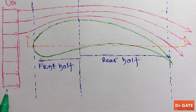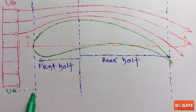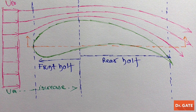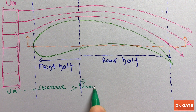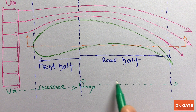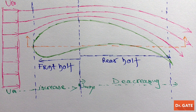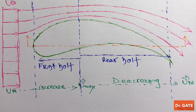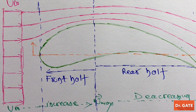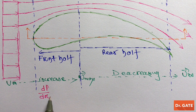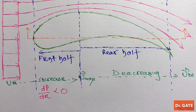To summarize: here velocity is u-infinity, and as we move along the flow there is an increase in velocity. Here velocity is maximum. If we further move along the flow, velocity will start decreasing and becomes u-infinity again. Applying Bernoulli's equation between any two streamlines on the front half of the aerofoil, we can get that dp/dx is less than 0.